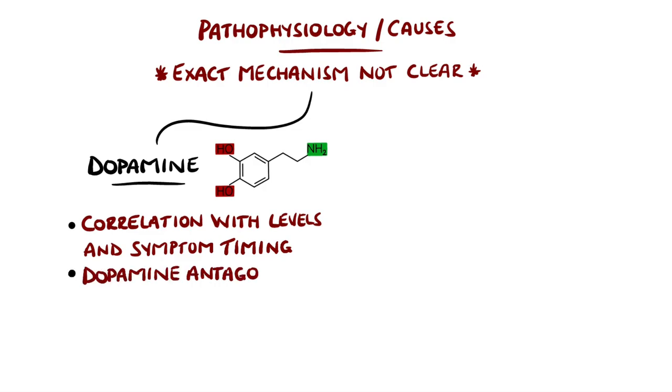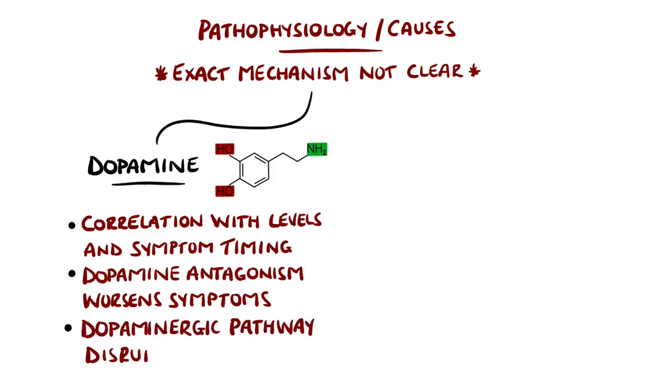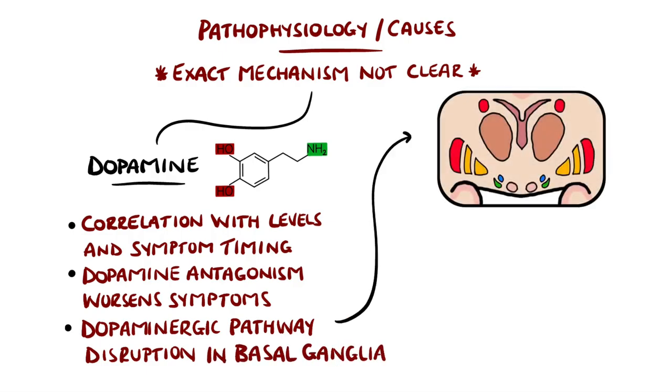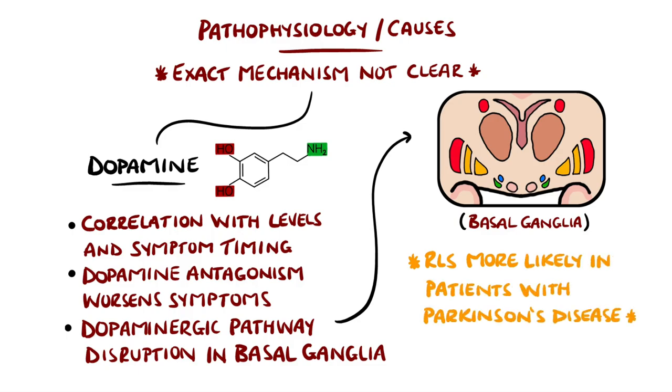The role of dopamine is also suggested by the medications we listed having dopamine-blocking properties. Some research suggests an abnormality in the dopaminergic pathways within the basal ganglia, which is also the location of disruption in Parkinson's disease. In fact, patients with Parkinson's disease are more likely to develop restless leg syndrome.